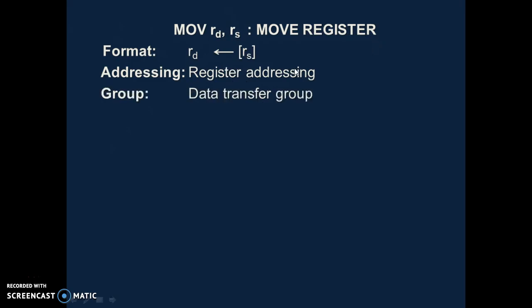The group is the data transfer group. This instruction comes from the data transfer group because we are transferring data from one place to another — from the source register to the destination. As for bytes, the total number of bytes this instruction takes is only one byte, because there is no data or address given in the instruction, so we will not need a separate byte for storing data or address.